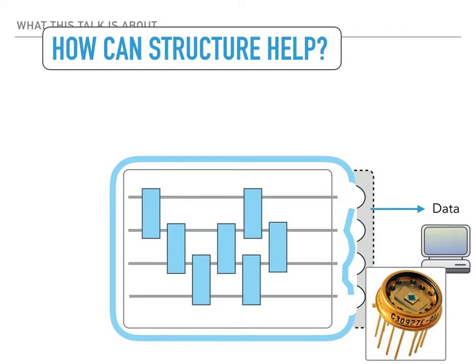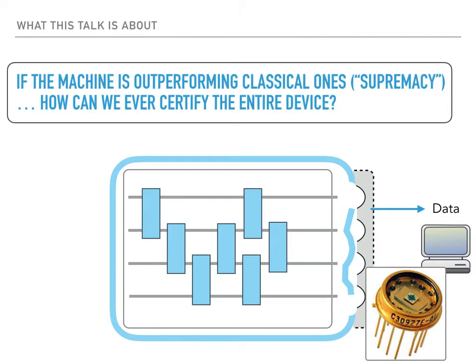If the machine is outperforming classical ones and is achieving a quantum advantage — or quantum supremacy, although this term has fallen somewhat out of favor recently — how can we ever certify the entire device and be sure about it? These will be the guiding questions in this talk as we meander through our scheme.